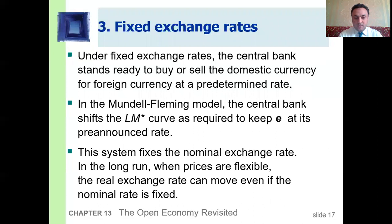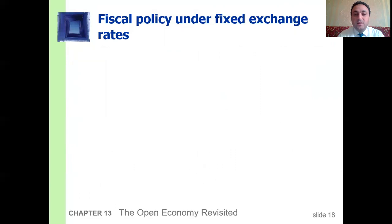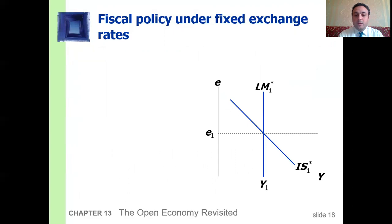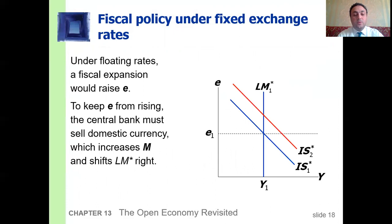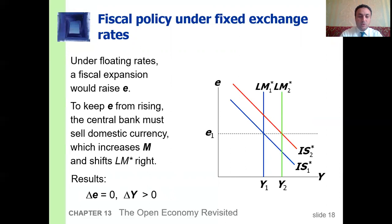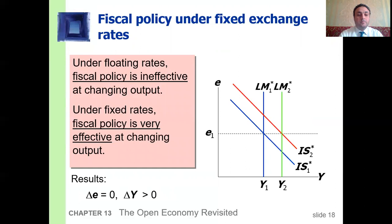Fiscal policy under the fixed exchange rate: under floating rates a fiscal expansion would raise the nominal exchange rate. To keep the nominal exchange rate from rising, the central bank must sell domestic currency, which increases the money supply and shifts the LM curve to the right. The result is no change in the nominal exchange rate but an increase in output. So under floating rates fiscal policy is ineffective at changing output, but under fixed rates fiscal policy is very effective at changing output.